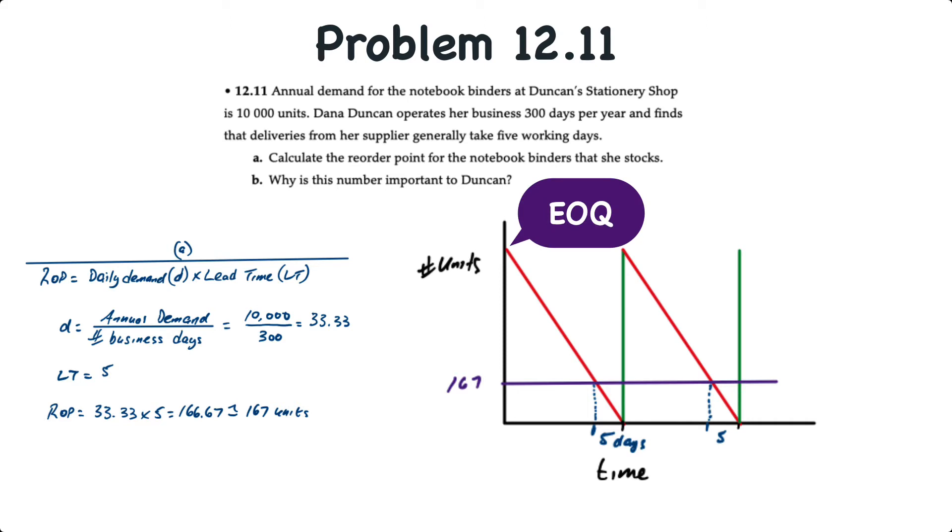When we place an order for whatever the EOQ is, once the order is received, the assumption is that the product is sold evenly over time. So you can see that the red line starts at some EOQ and will eventually reach zero.